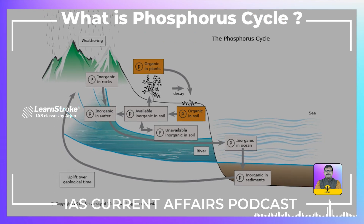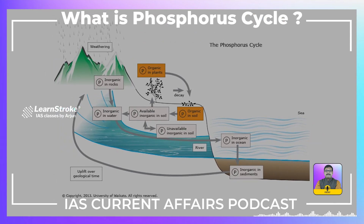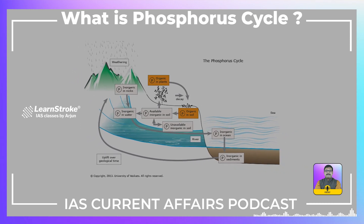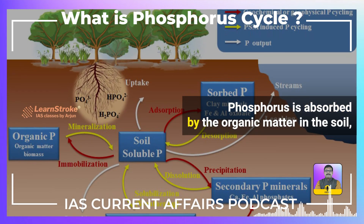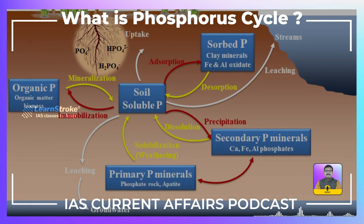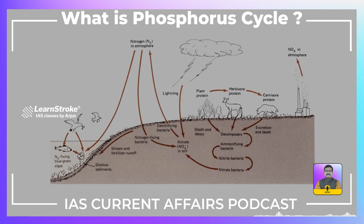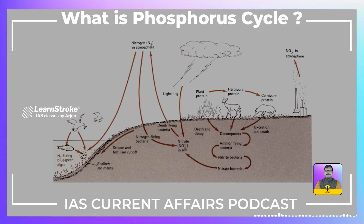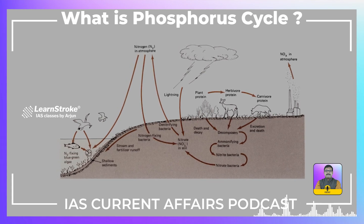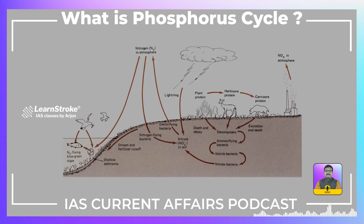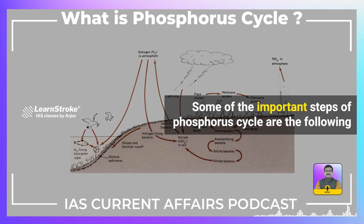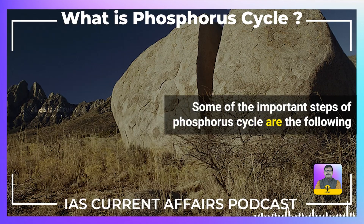The Phosphorus Cycle is a very slow process. Various weathering processes help to wash the Phosphorus present in rocks into the soil. Phosphorus is absorbed by the organic matter in the soil, which is used for various biological processes. Since Phosphorus and Phosphorus-containing compounds are present only in land, the atmosphere plays no significant role in the Phosphorus Cycle. Let us have a brief look at the Phosphorus Cycle, its steps, and the human impact on the Phosphorus Cycle.